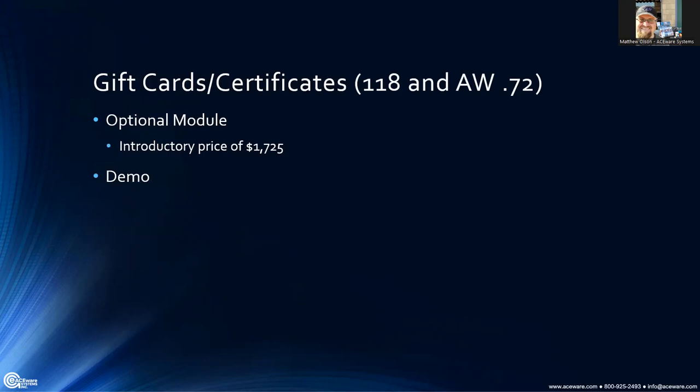Sharon alluded to a new module coming in. I'm going to show this screen without talking too much about it yet because I want to show it more when we get into the ACE web stuff. This is going to be an optional module dealing with the ability to sell and redeem gift cards and gift certificates. We've got some introductory pricing — tentatively $1,725 — and it'll probably be going up sooner than later.